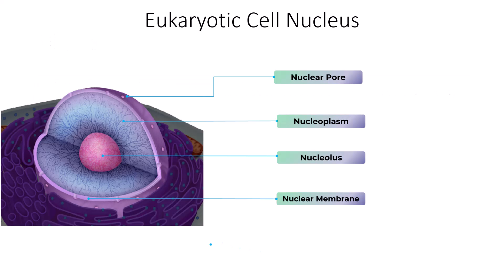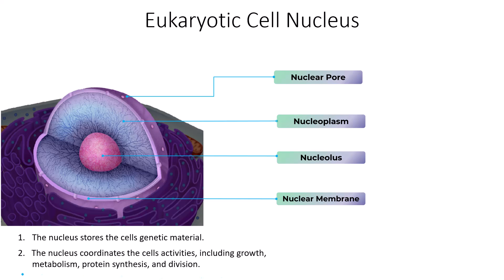The first thing we need to do when discussing the eukaryotic cell nucleus is identify the functions of this particular organelle. The first function is the nucleus stores the cell's genetic material — all of the cell's DNA is housed within the nucleus. The second is the nucleus coordinates the cell's activities, including growth, metabolism, protein synthesis, and division. The nucleus is not only the hub where inherited information — the DNA — is kept, it is also the governing body of the entire cell.